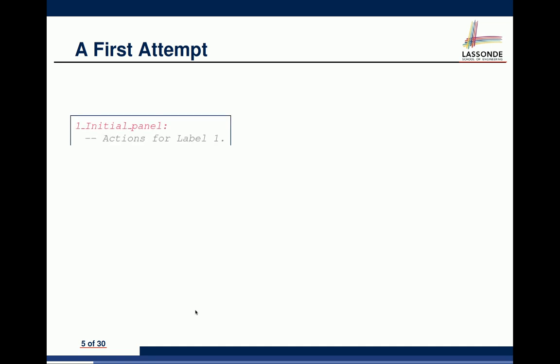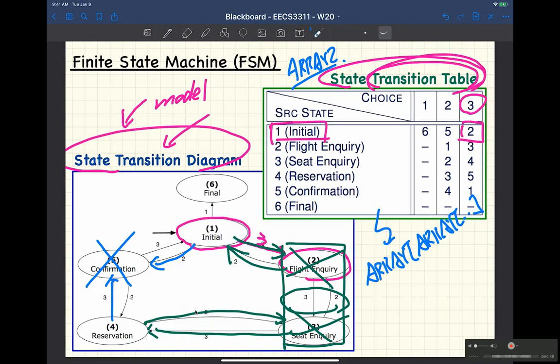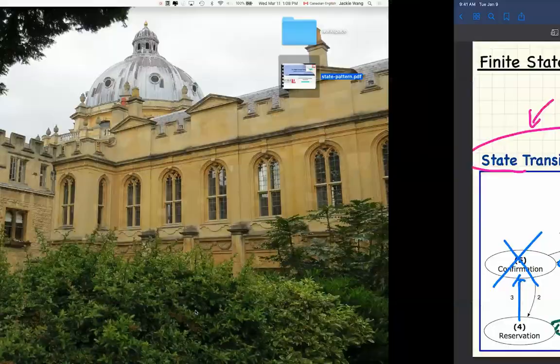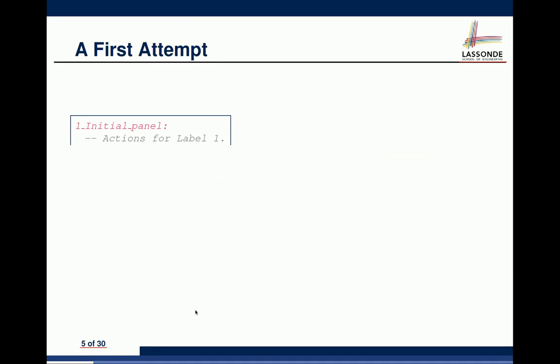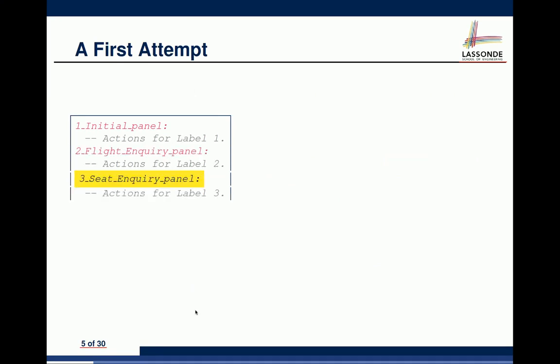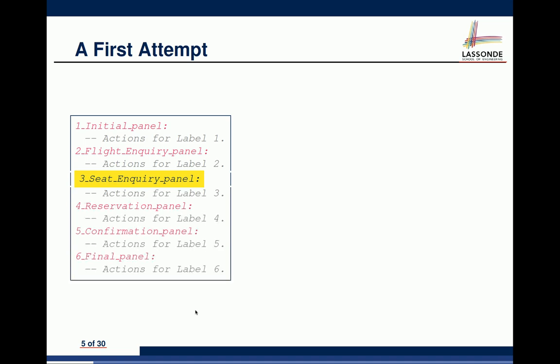The way to do it is by having a single file where everything is defined. Since the state diagram has six states — one, two, three, four, five, and six — we're going to program six different sections in a single place. State one is called the initial panel, then we have the flight inquiry panel, three, four, five, and six. This is the overall structure for the first design.